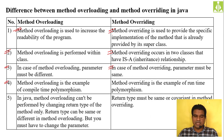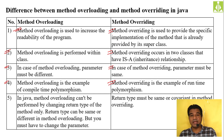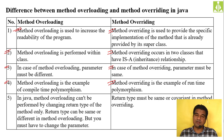Method overloading is an example of compile-time polymorphism — at compilation time the call to the method is decided; where the call is made and where the body exists is resolved during compilation. Method overriding is runtime polymorphism or dynamic polymorphism, because the call to the method body is resolved at the time of execution — when you run the program.